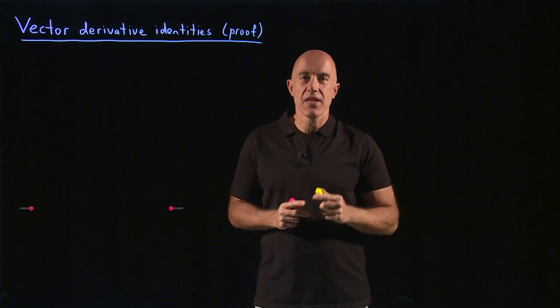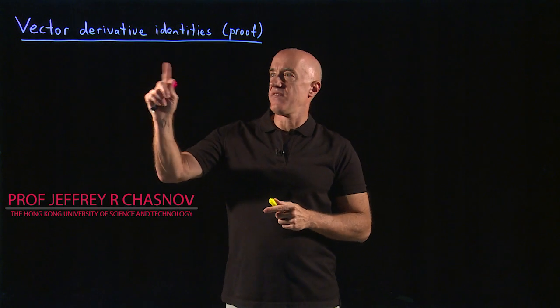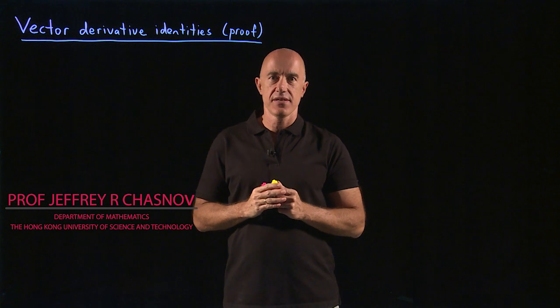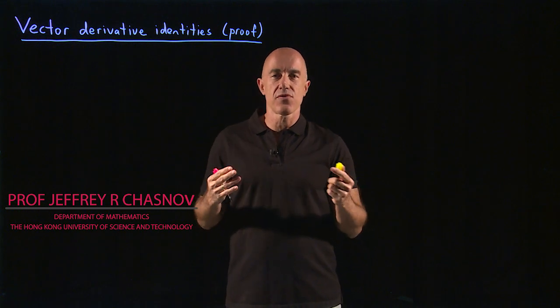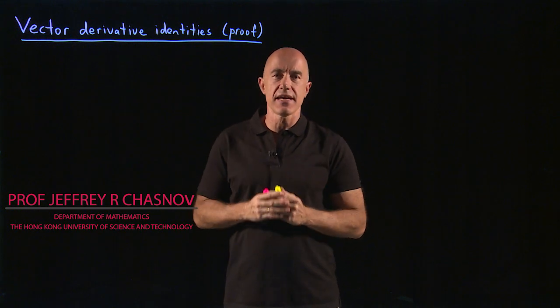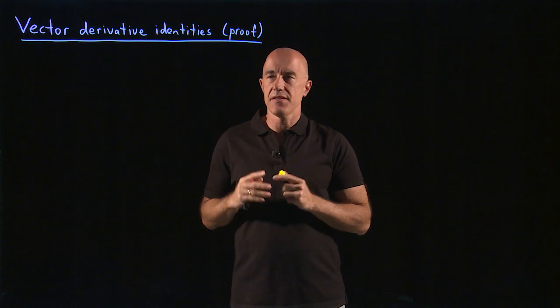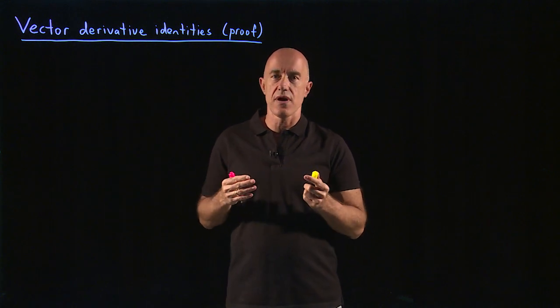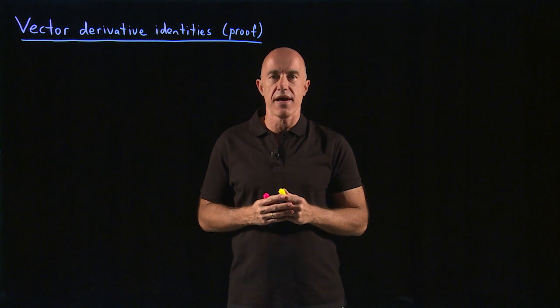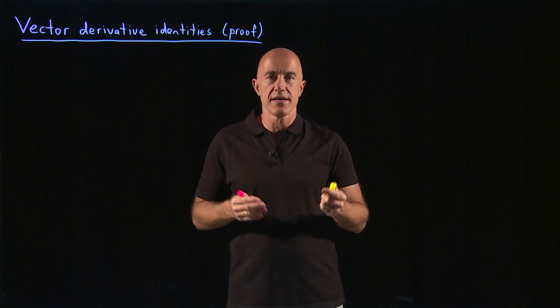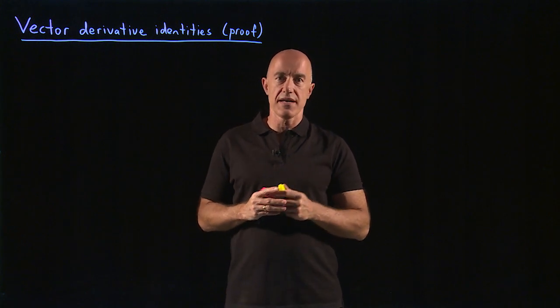So in the last video, I introduced eight of these vector derivative identities. You may be wondering, how do you prove identities like that? In this video, I want to show you at least how to prove one of them. I'll give you a couple of them to do as problems.